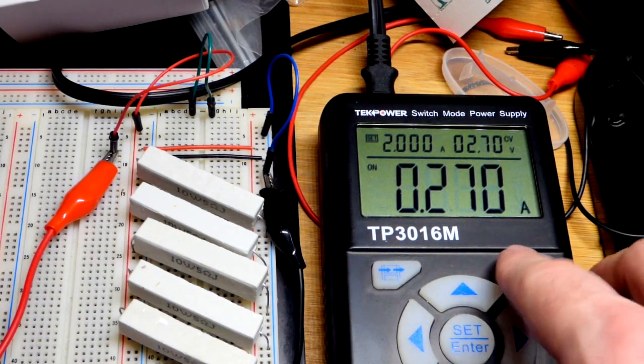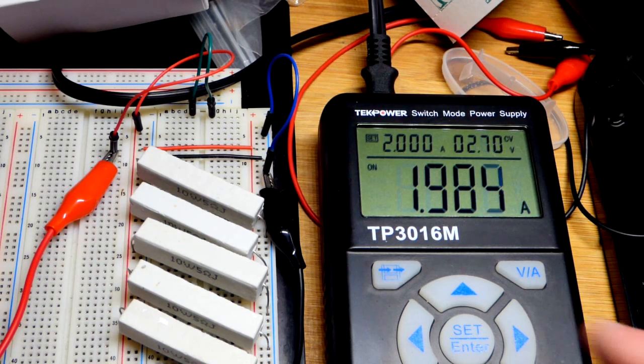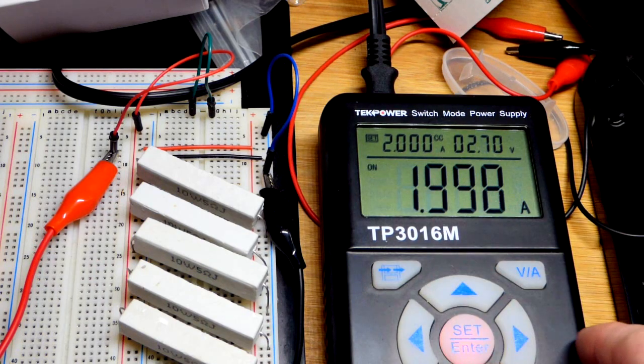But in any case, that's all stuff to look at for fun later on. There we are, really close to 2 amps of current. So we have the constant current there.